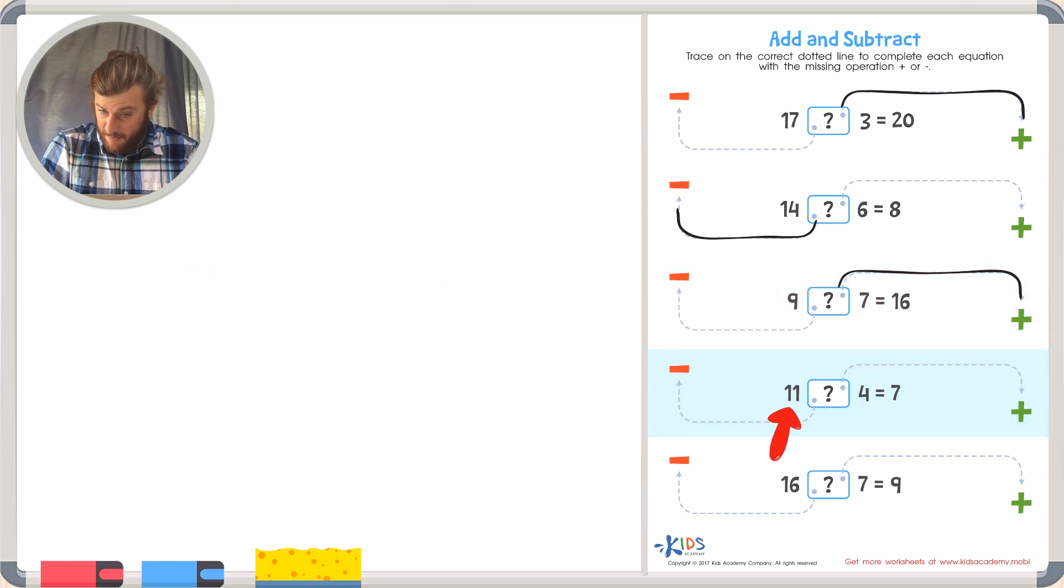Our fourth example has 11 plus or minus 4 equals 7. So we have our number of 11 and we need to shrink it so that way it turns into a 7.